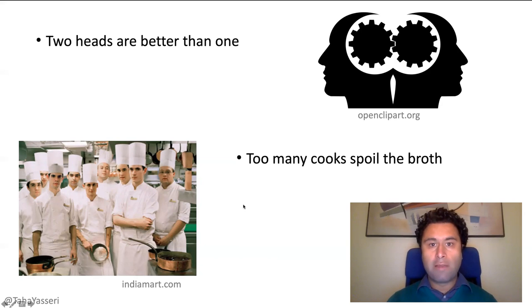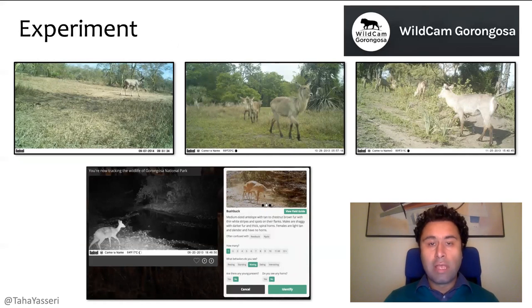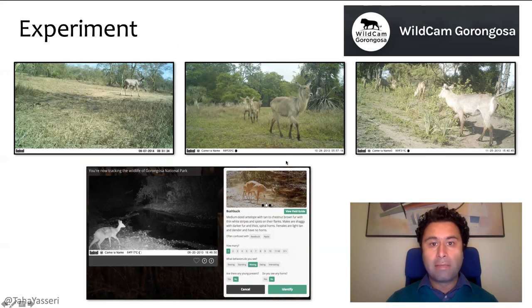We wanted to have an experimental approach to this question and we turned to a real world citizen science project. In this citizen science project, contributors have to categorize images that are automatically taken from a national park in Mozambique called Gorongosa, and determine if the image shows an animal, what type of animal and what the animal is doing and so on.